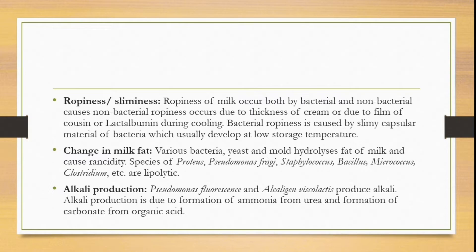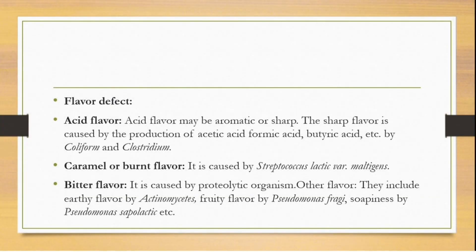Species of Pseudomonas fragi, Staphylococcus, Bacillus, Micrococcus, etc. are lipolytic. Alkali production — Pseudomonas fluorescens and alkali-producing viscous lactase produce alkali. Alkali production is due to the formation of ammonia from urea and the formation of carbonate from organic acid.